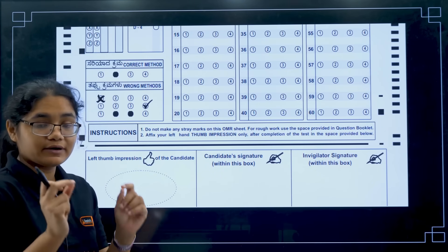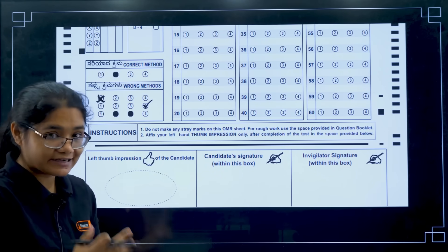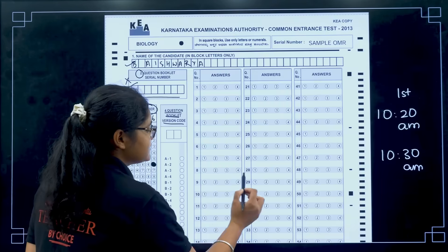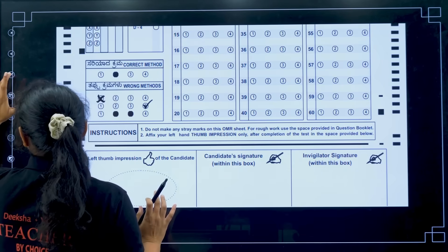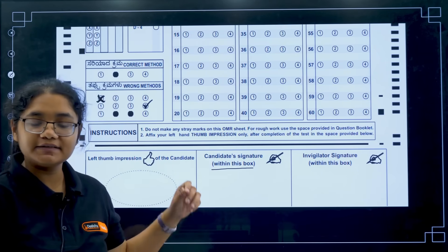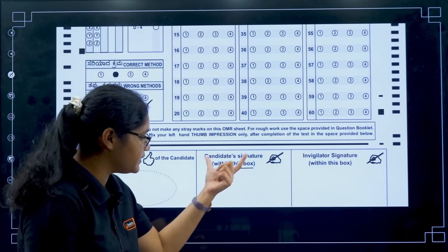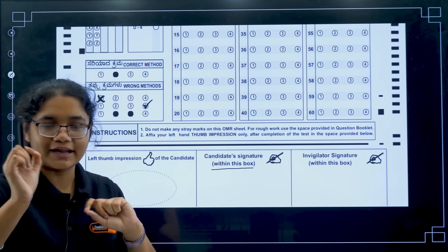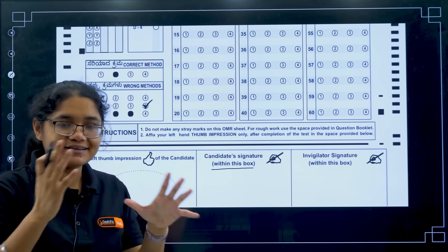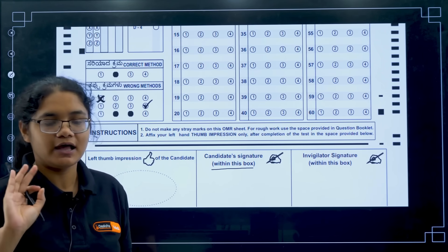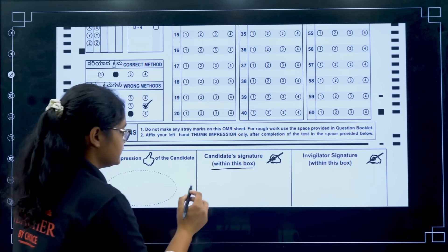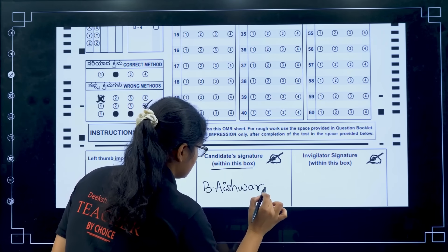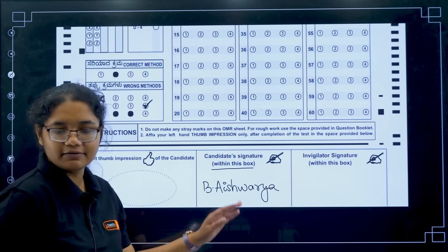After filling the question booklet version code and serial number, towards the end of the OMR sheet there is a candidate signature section. Please put your signature within the box — it should not go outside and should be legible. Don't use a fancy signature; just write your name in simple handwriting. That is enough.